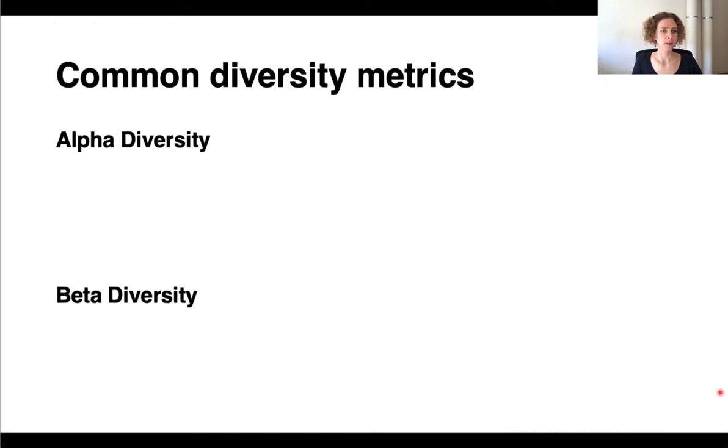Now, what are the common diversity matrices? I mentioned that there are several out there, and here I just go over the ones that are calculated by default in QIIME2 core diversity in this pipeline we're using.